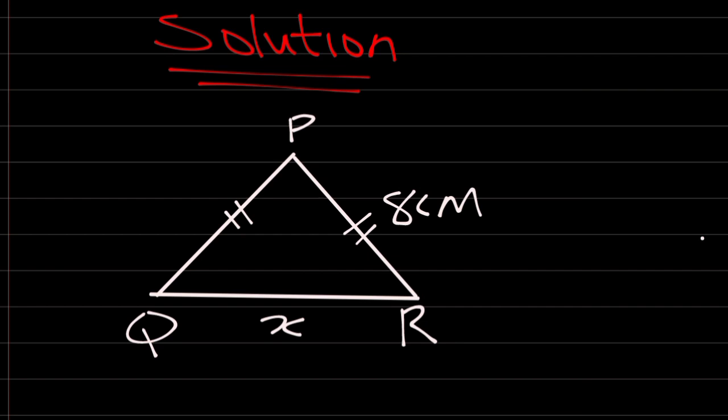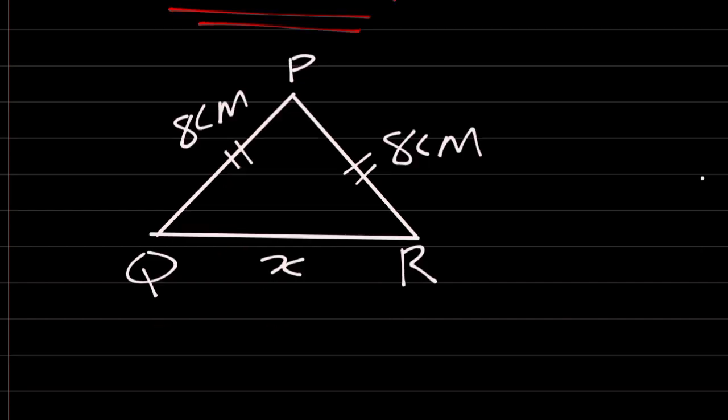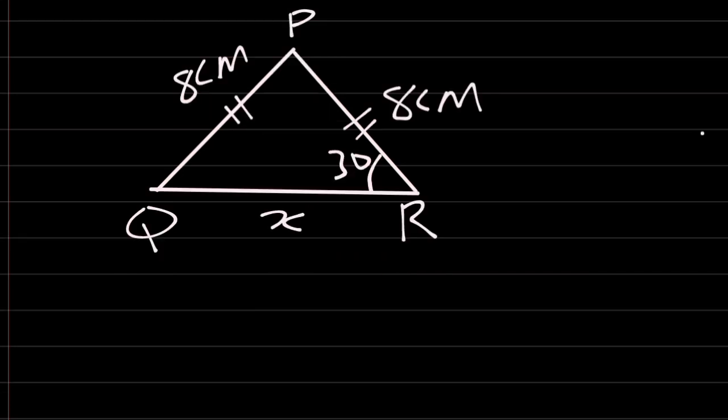8 cm. But since the question says that point P is always equidistant from Q and R, that means QP will also be 8 cm. Angle PRQ, the angle located here is equal to 30 degrees. This is all we need.